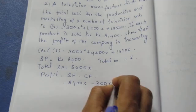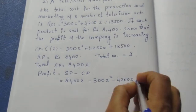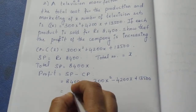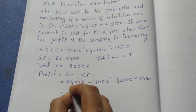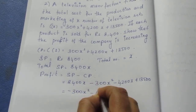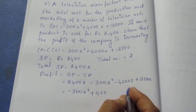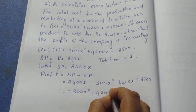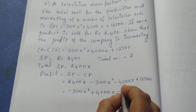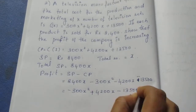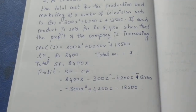Expanding: 8400x minus 300x squared minus 4200x minus 13500. Solving the like terms, we get profit P(x) equals minus 300x squared plus 4200x minus 13500. This is our profit function, and we need to show it is increasing.